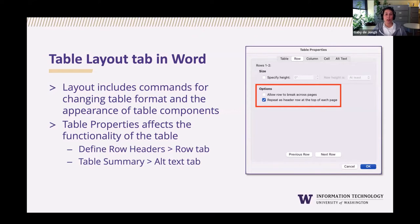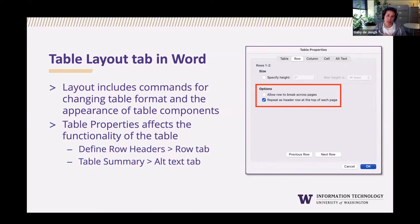Essentially, you want to uncheck 'allow rows to break across pages' and check 'repeat header row at the top of each page.' If you want to include a table summary, which assists assistive technology users by providing meaningful information about the table, within the table properties box select the alt text tab and enter a short description in the description field. Leave the title field blank and include the table information only in the description field.